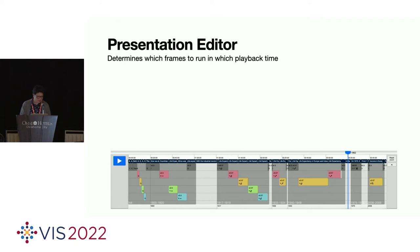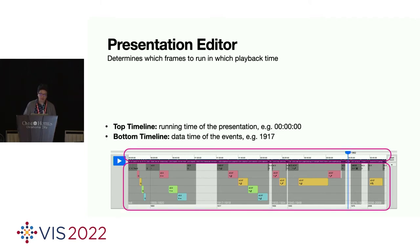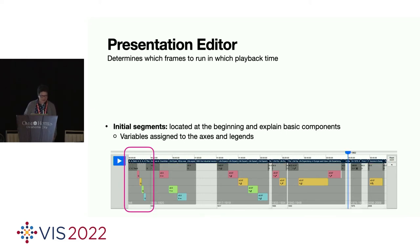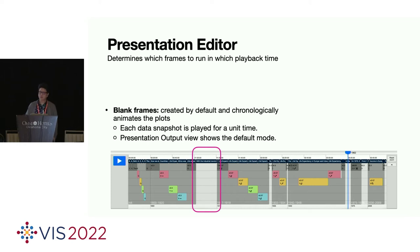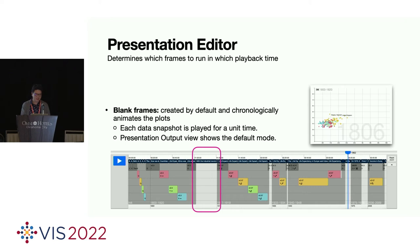So, at the bottom of the system is the presentation editor. There are two timelines at first. The top timeline is for running time of the presentations. And the second timeline is the data time of events. And in this view, we put initial segments, which is located at the beginning, and explaining basic components. And if you can remember the Hans Rosling's video, one of his famous and popular strategies is to explain x-axis and y-axis. We exactly try to incorporate and follow that strategy in the system.